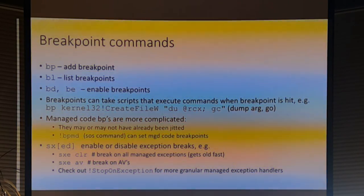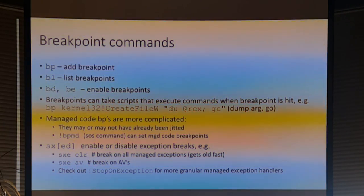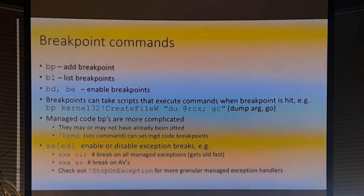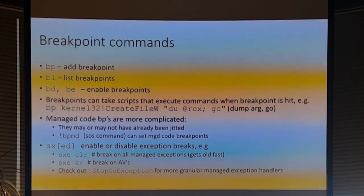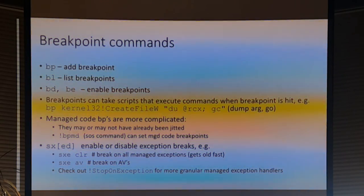Another wrinkle with .NET is pre-NGen DLLs. MS CoreLib is famous for this — you'll have an MS CoreLib NI, which stands for native image. Sometimes you'll try to put a breakpoint in MS CoreLib and rip your hair out because it won't stop — it's because you're putting it in the native image instead. You just have to think about what you're doing and figure out why it's biting you.